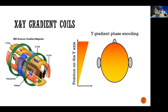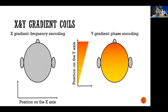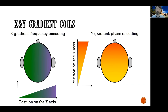The third gradient coil works in the frequency domain — not phase — but the principle is exactly the same. Here's our slice of the brain. The third gradient goes conventionally from left to right, the X direction, side to side. So now I have a mechanism not only to select protons in a certain slice in the Z direction, but also to know where protons are front to back in the Y direction or side to side in the X direction.